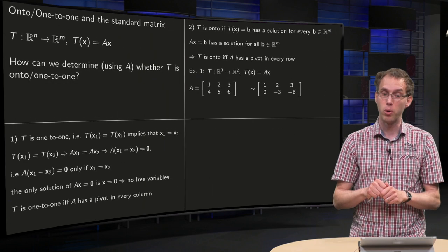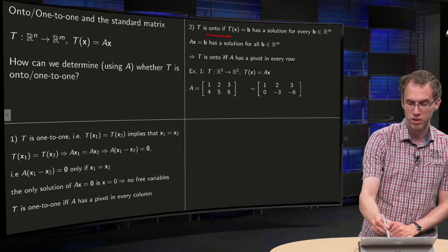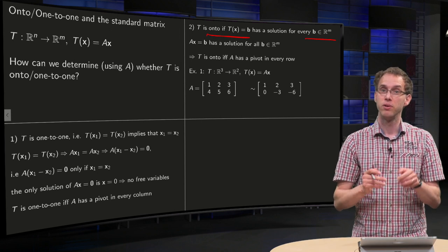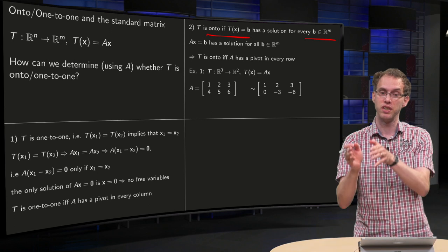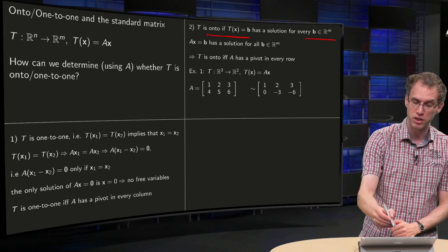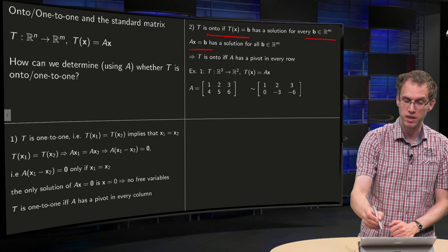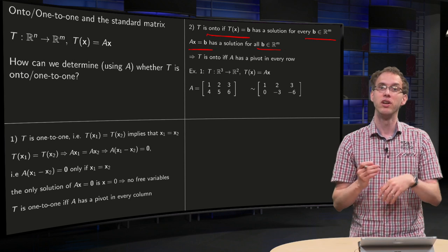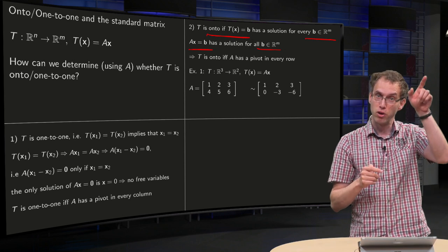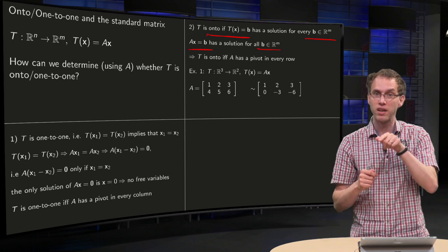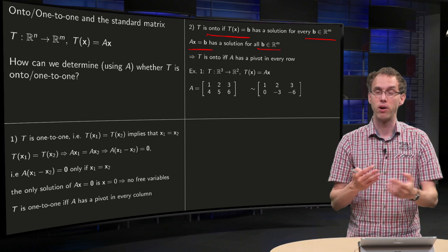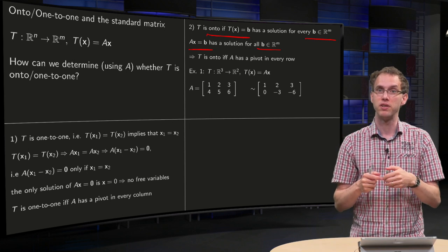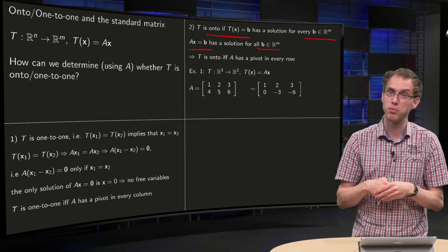Now the onto case. T is onto if T(X) equals B has a solution for every B in R^m. You have to find an X for any B in your codomain such that T(X) equals B. So that means that your matrix equation AX equals B needs to have a solution for all B in R^m. So AX equals B may never be inconsistent. A criterion for that is as soon as you have a pivot in every row your linear system will not be inconsistent. And as soon as some row doesn't have a pivot you can always find a B such that your system becomes inconsistent.